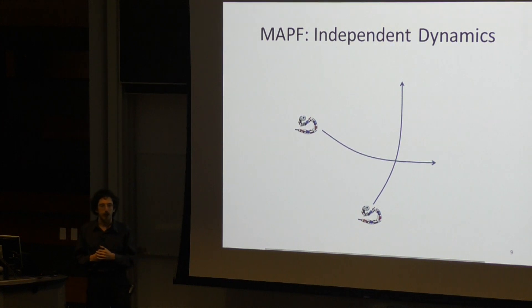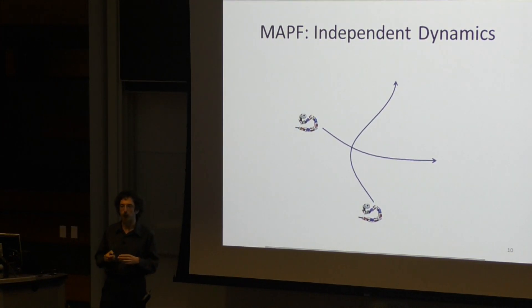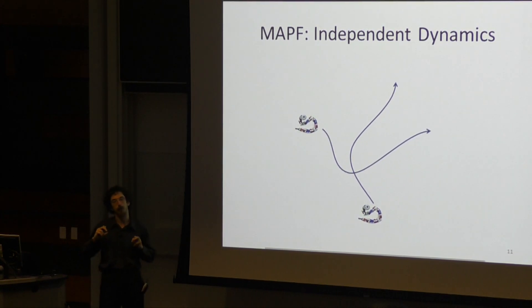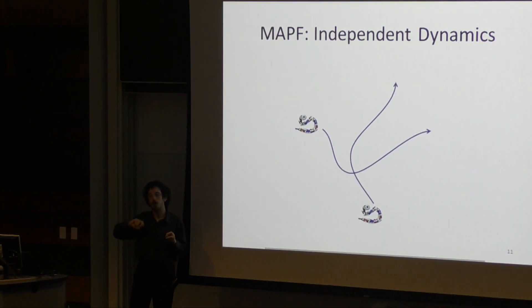The other important property is that the dynamics of the robots are independent. You can change what one robot does without changing the state of the other robot. What this means in practice is that a conflict involving a given set of robots can be resolved and can only be resolved by changing the paths of the robots involved in that conflict.